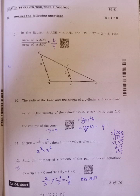Tenth, the radii of the base and the height of cylinder and the cone are same. If the volume of cylinder is 27 cubic units, then find volume of cone. Volume of cone equals to 1 by 3 pi R square H. Here pi R square H is given, that is nothing but volume of cylinder 27. 1 by 3 into 27 gives 9.